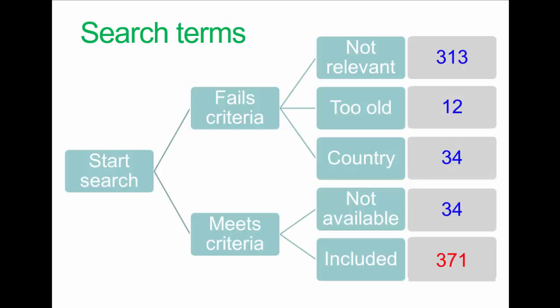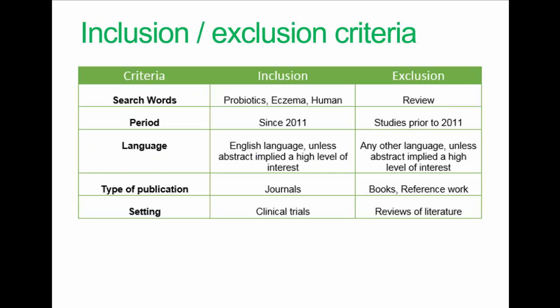This can be done visually, like this example shown, but there are many other ways of doing it. Regarding inclusion and exclusion criteria — you may want to consider these. These are characteristics that make a study eligible or ineligible for inclusion in your review.